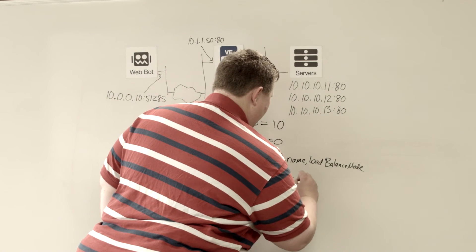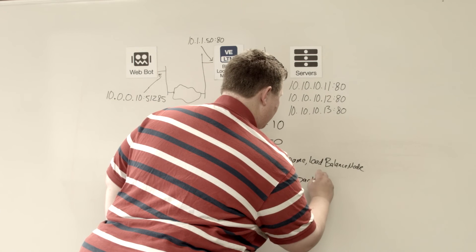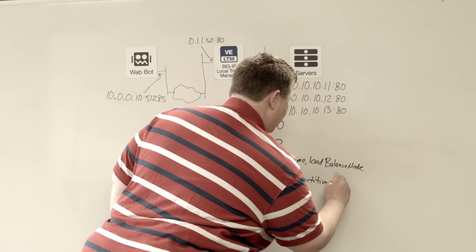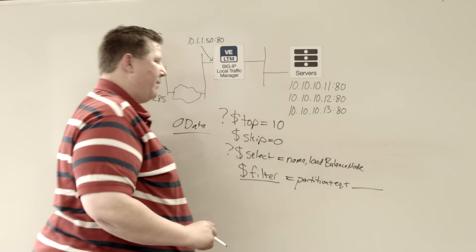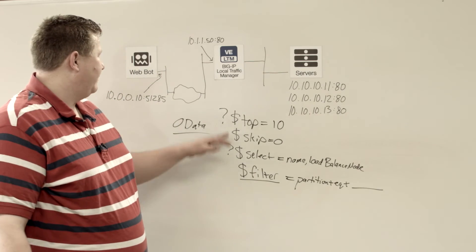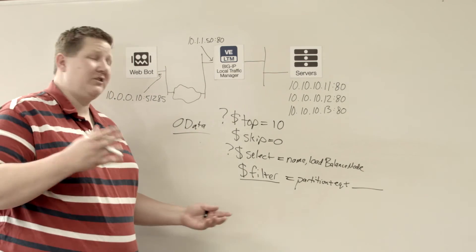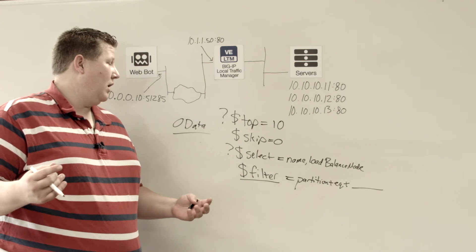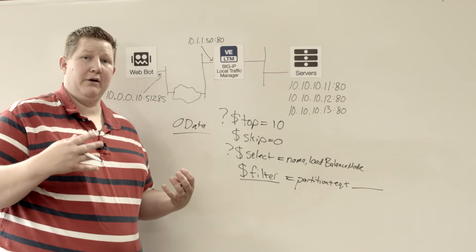And then of course, we already talked about the filter. That would be partition equals, and then whatever your partition name is. And so anyway, there's a bunch of different options that you can use to work with the data being returned from the big IP.